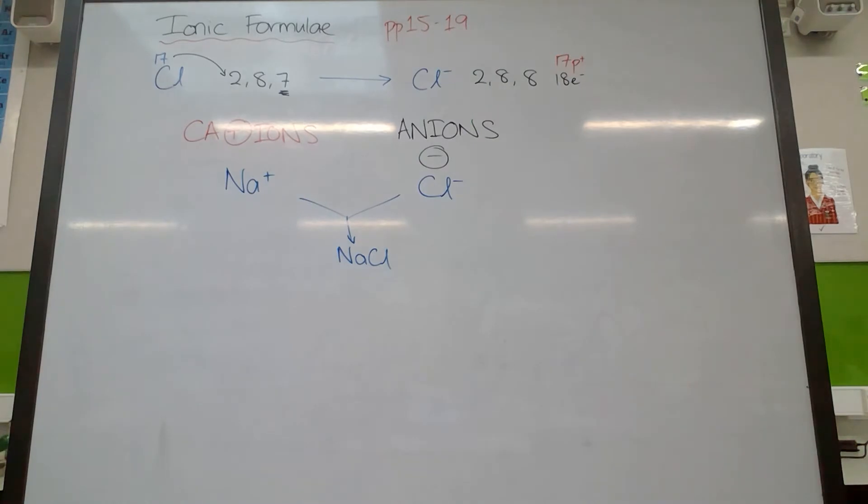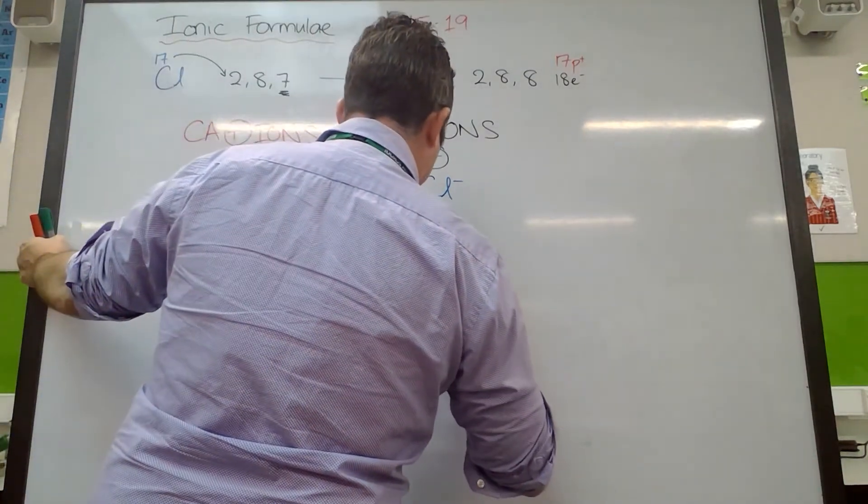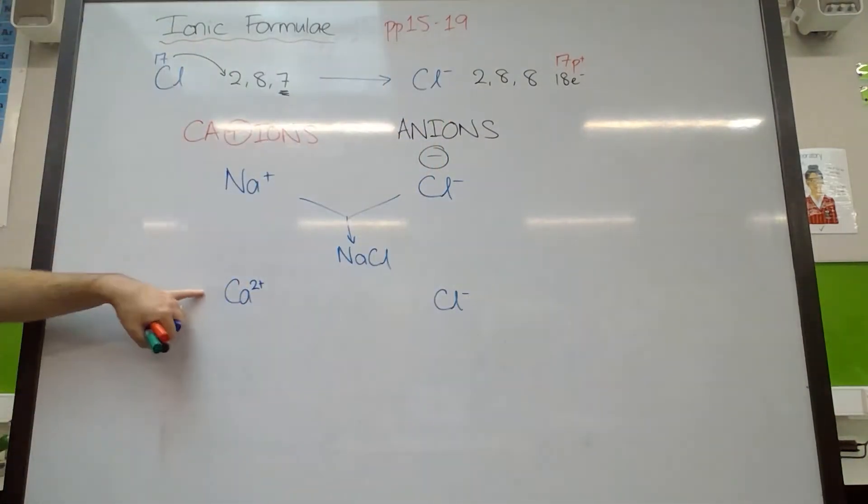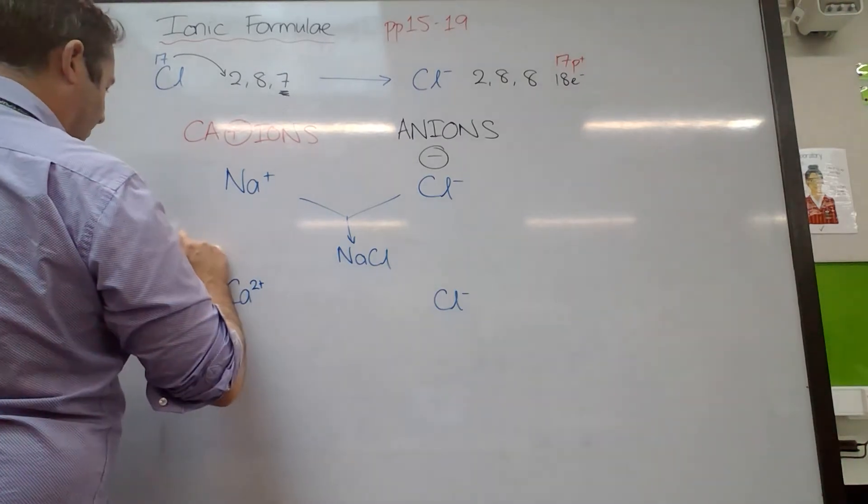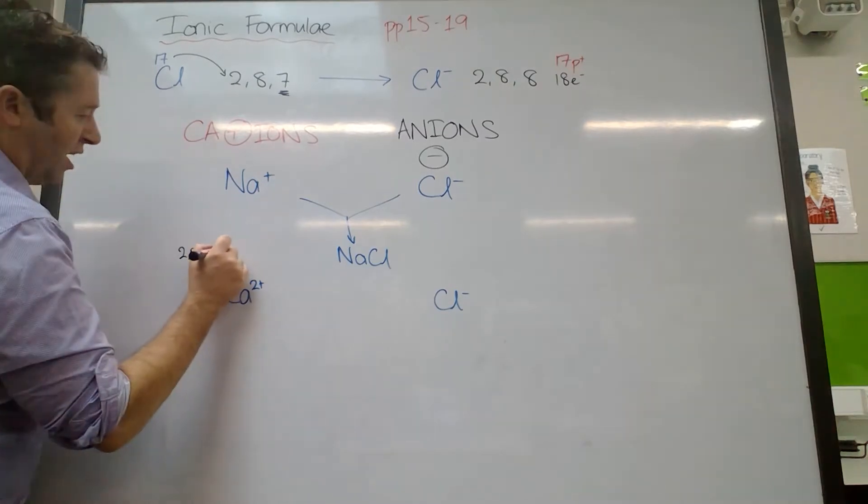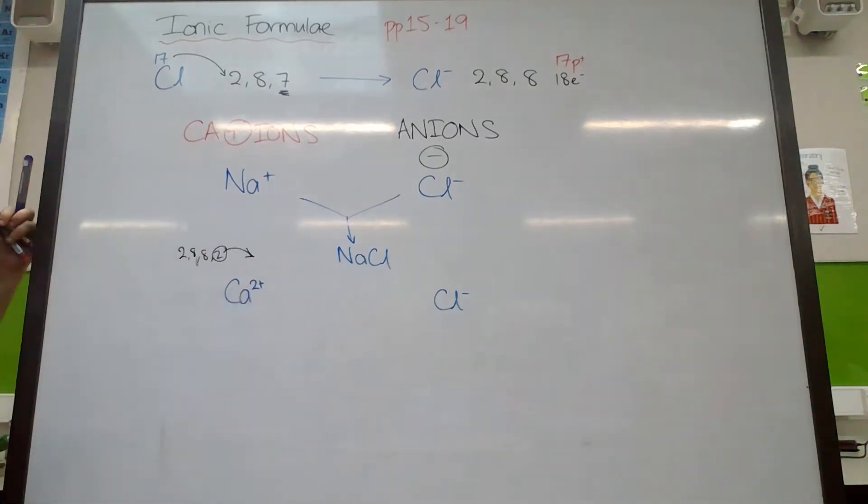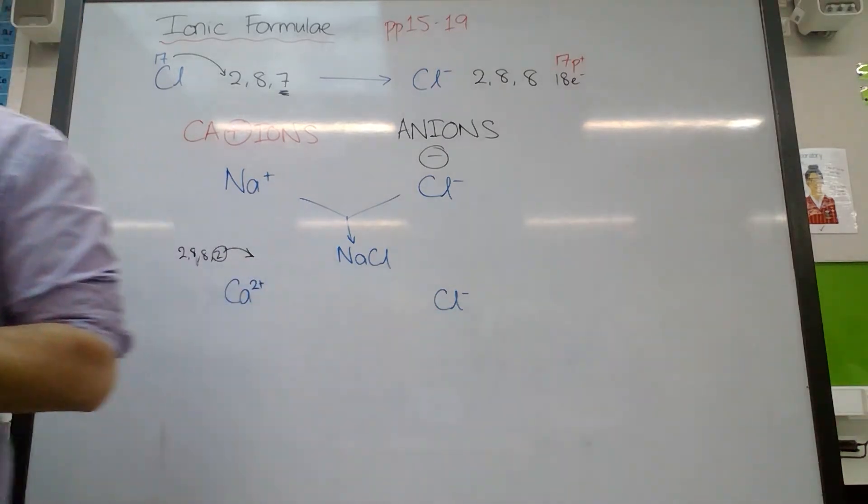It gets a little bit harder when we get to something like, let's say calcium and chloride. There are two pluses here. It's got more positive charge because being 2, 8, 8, 2, which was its original electron configuration, it loses these two electrons, becoming two plus.